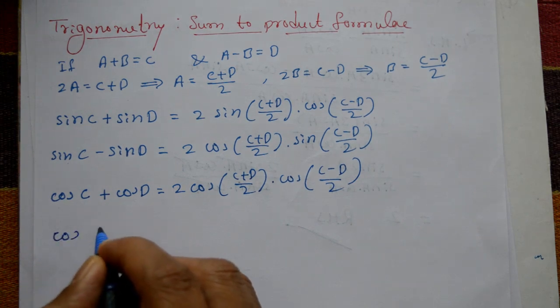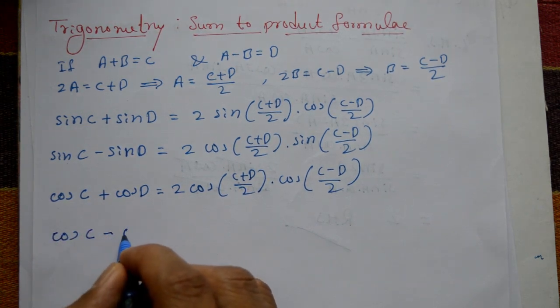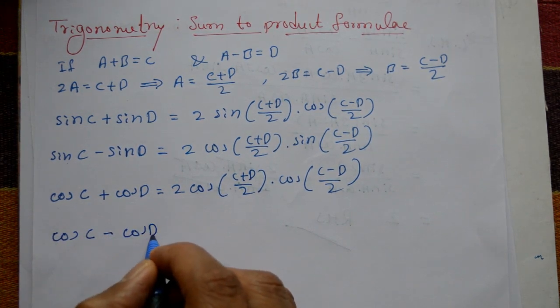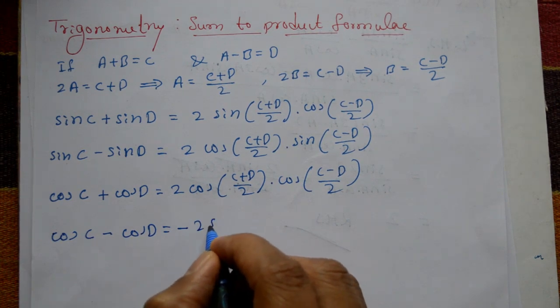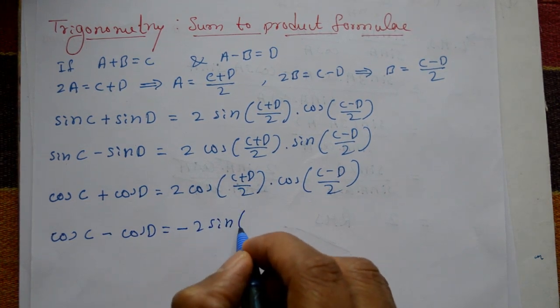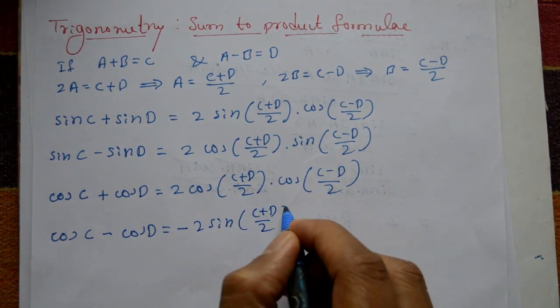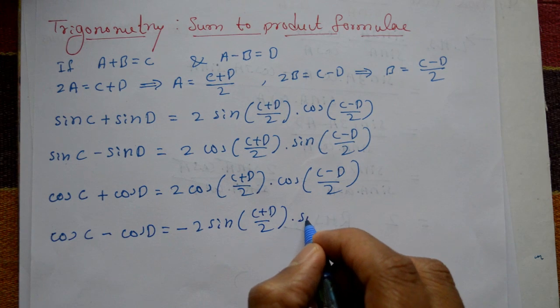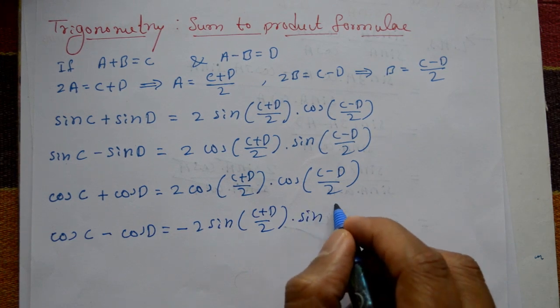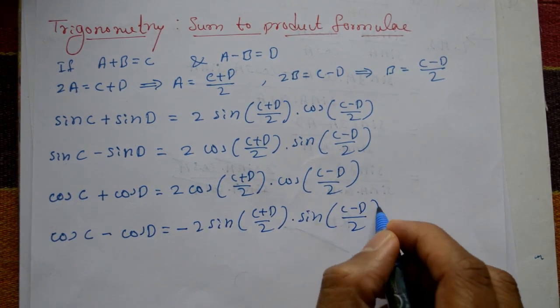Equation number eight becomes: cos C − cos D = −2 · sin((C + D)/2) · sin((C − D)/2).